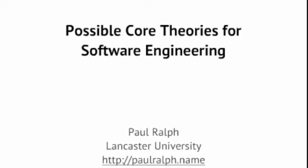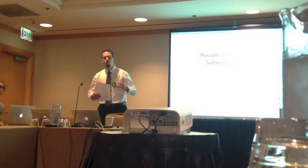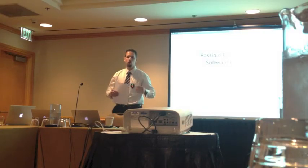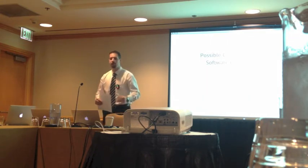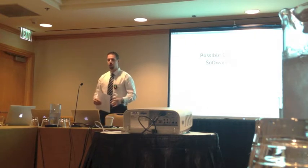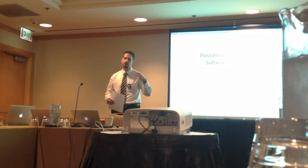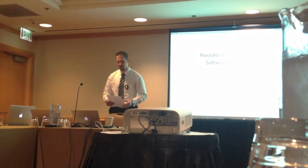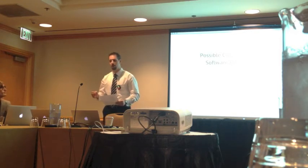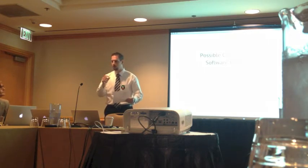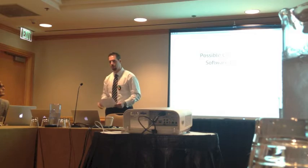This is Paul Ralph, who is presenting possible core theories for software engineering. Hello, everybody. I'm working under the assumption that one way to generate a general theory of software engineering is to integrate a variety of existing core theories that apply at different levels of abstraction or different levels of analysis. Today I'm going to talk about five such core theories, very briefly. Please hold your questions to the end because I don't want to get bogged down in one of the five and not get to the other ones.